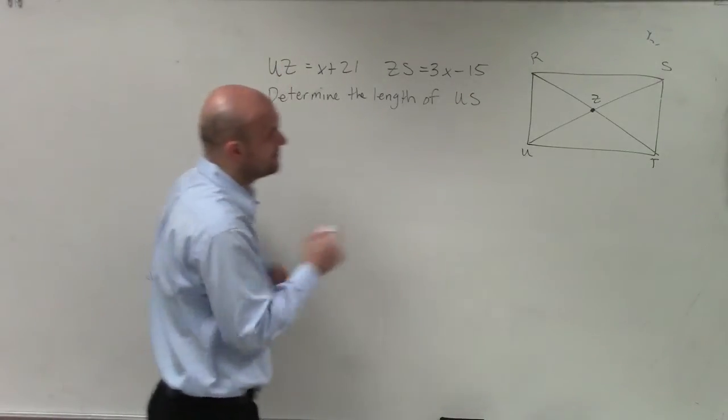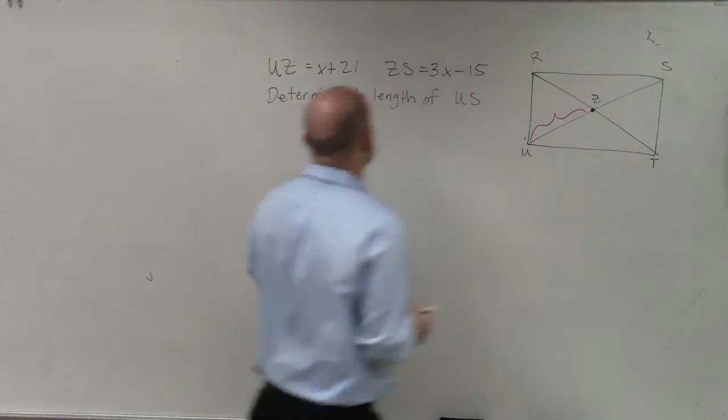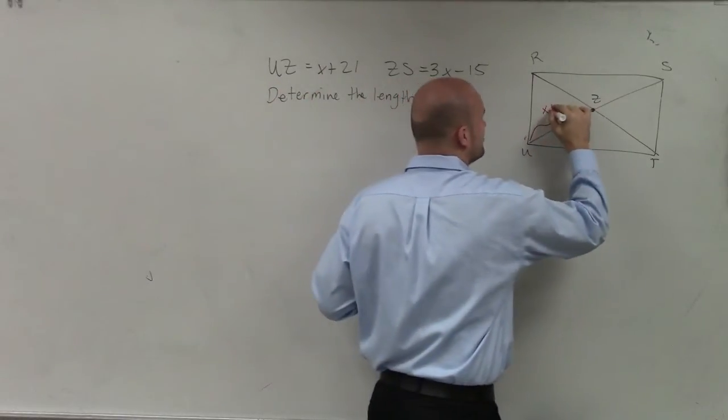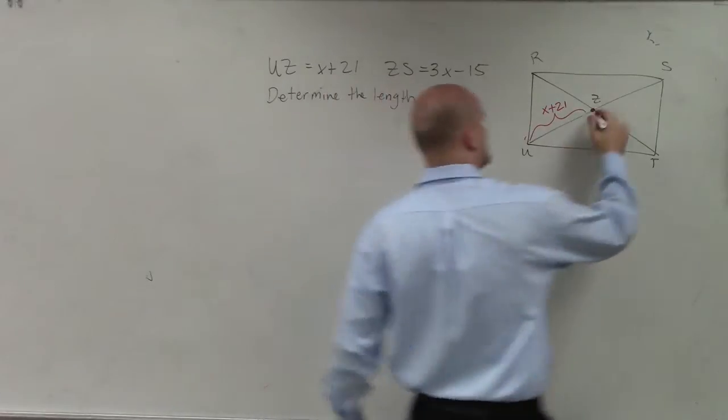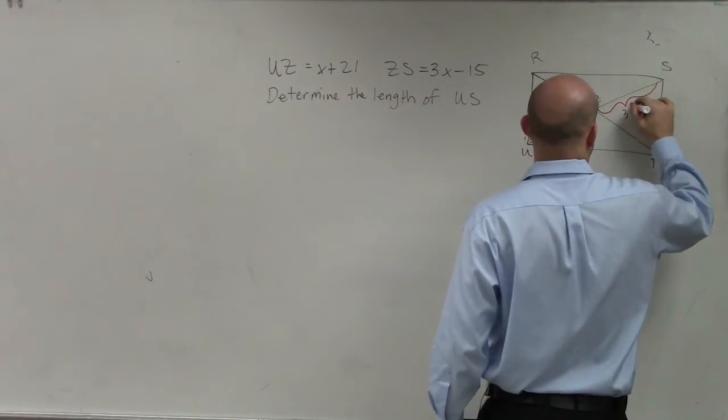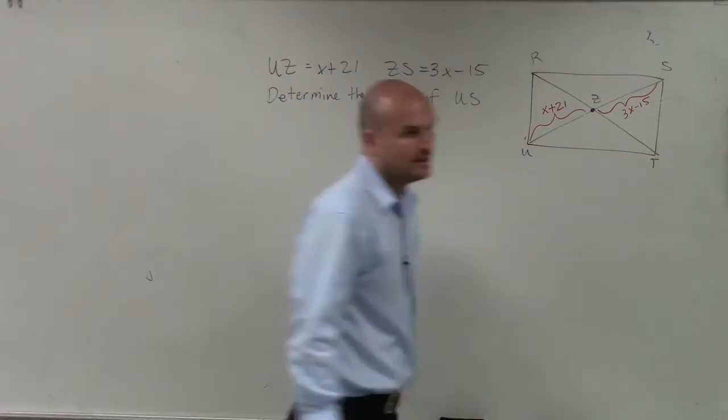They say UZ, from U to Z, they say that is x plus 21. Then they say Z to S, that's this distance, is 3x minus 15.